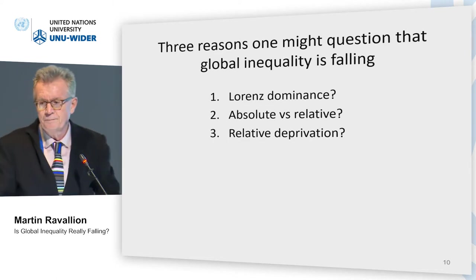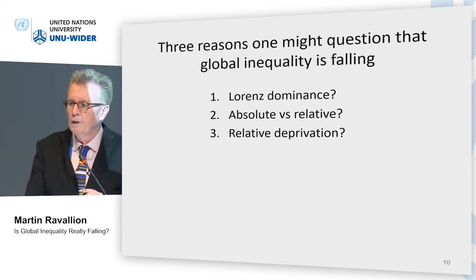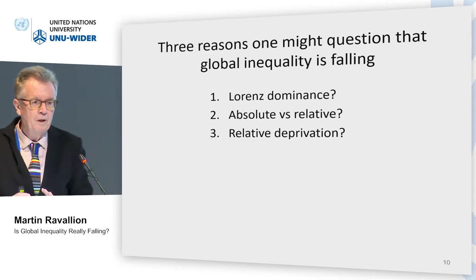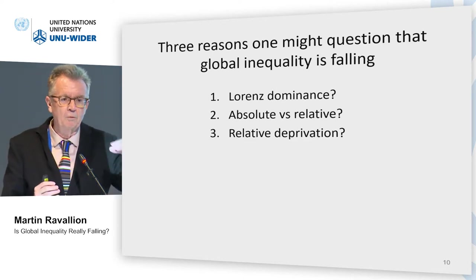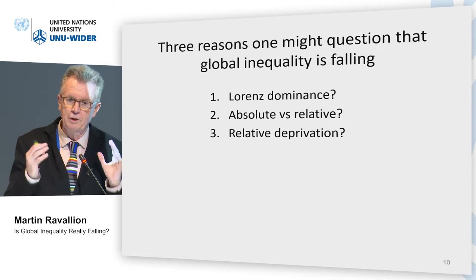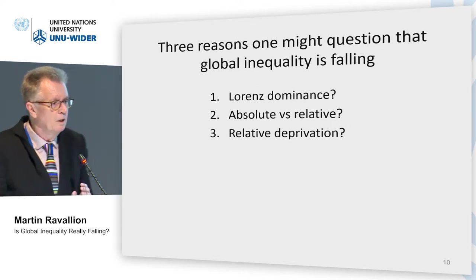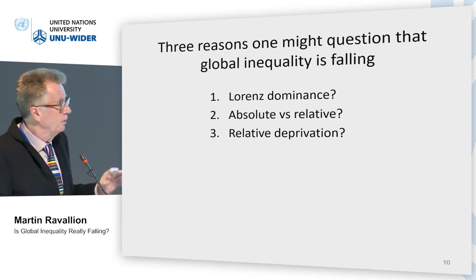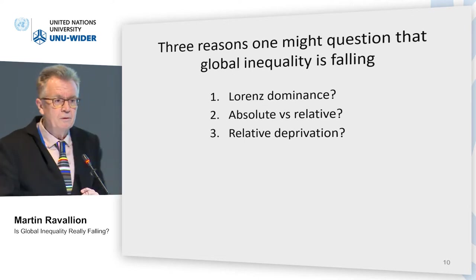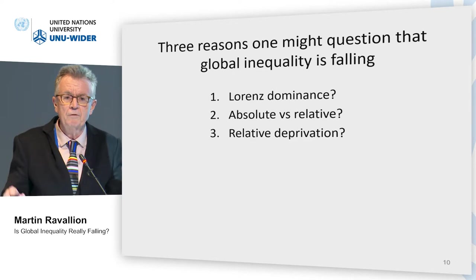I'm going to look at three things. One thing I'm not going to do is abandon what others call the cosmopolitan approach — I'm not going to say that foreigners are worth less than people within your country. I'll treat people as people wherever they may live, as an ethical starting point. The three things are: first, an easy one — Lorenz dominance. When we say inequality is falling in the world, do we have Lorenz dominance?